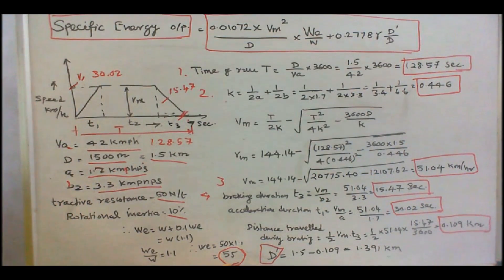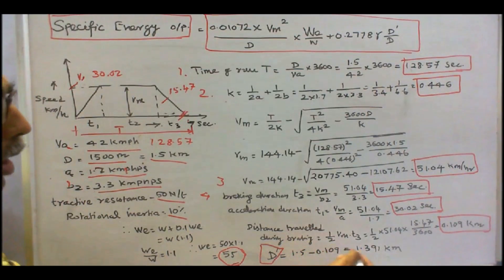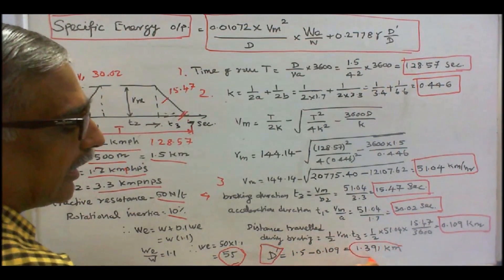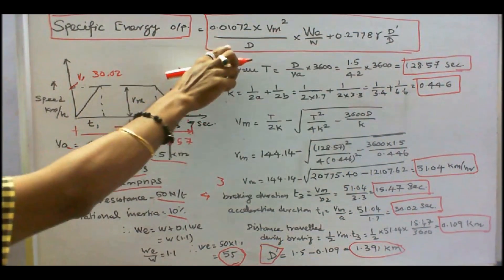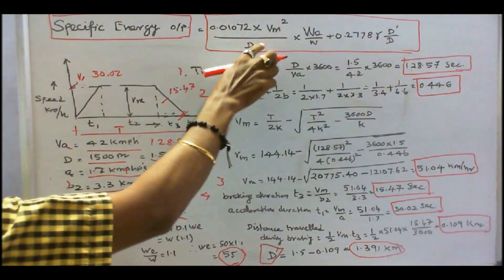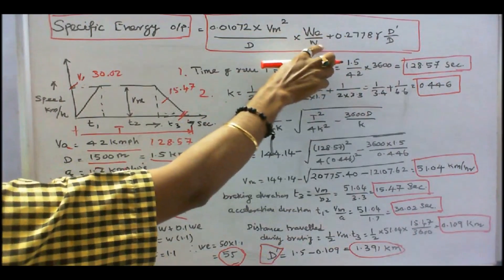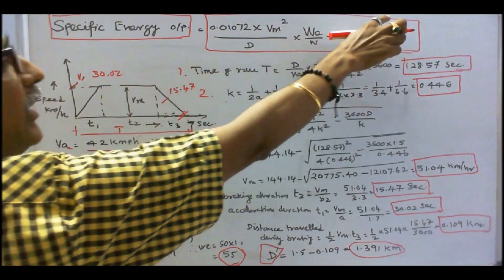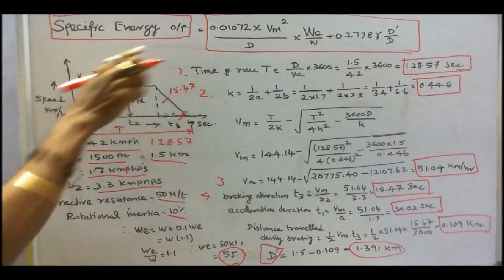D' = D minus the braking distance = 1.5 − 0.109 = 1.391 km. Now we know Vm, D, accelerating weight, dead weight, D', and can find the specific energy output.